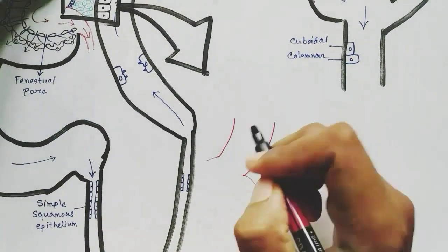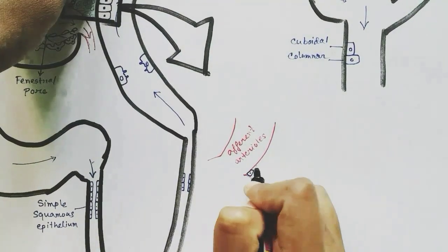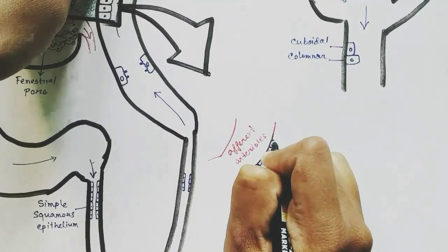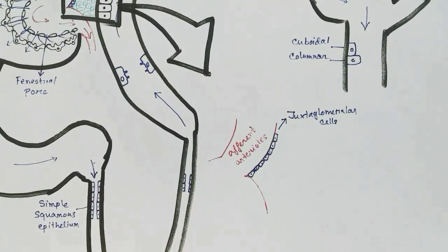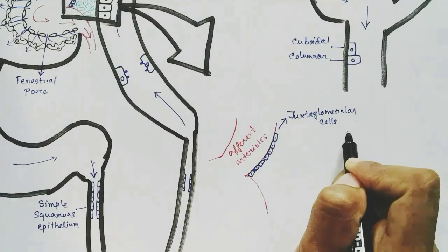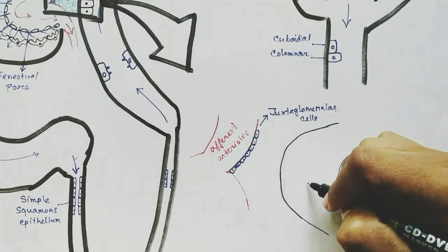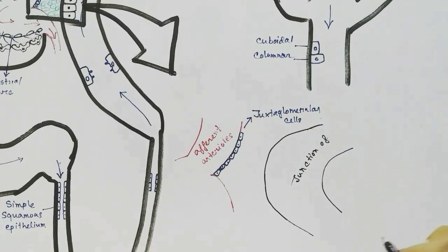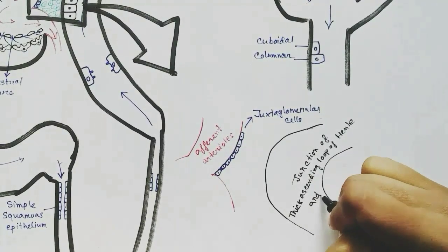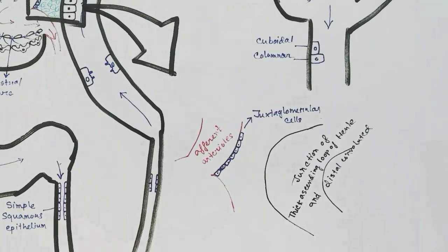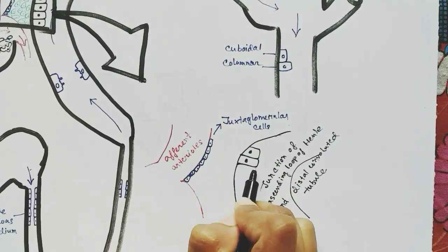This is the afferent arteriole on which the juxtaglomerular cells are present. This is the junction of the thick ascending limb of the loop of Henle and the distal convoluted tubule.